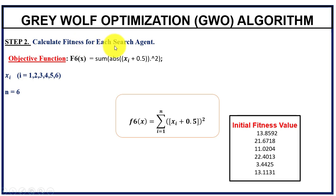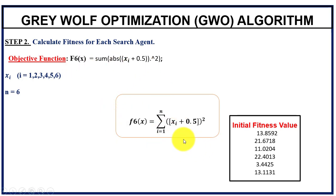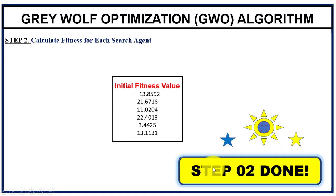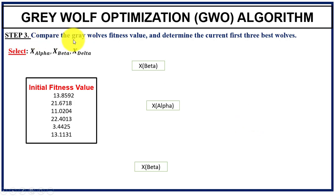Next, we calculate the fitness for each search agent. The fitness function used here is fitness function number six from the main research paper by Mirjalili. Applying this function gives us the initial fitness value for each search agent, resulting in a fitness value for each of the six wolves.